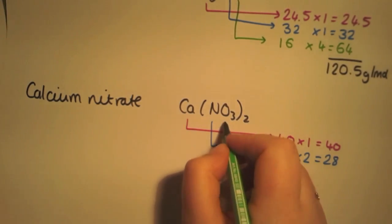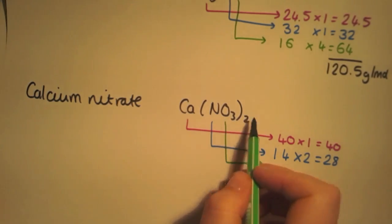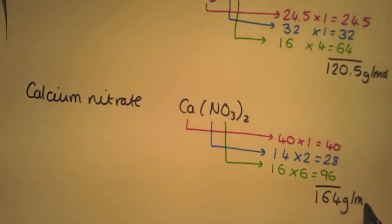And then finally, oxygen. There are 3 oxygens per nitrate, and as we have 2 of them, that will give us 16 times 6, which is 96. Adding all of that together gives us a total of 164 grams per mole.